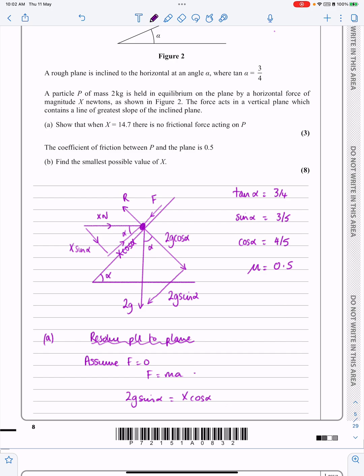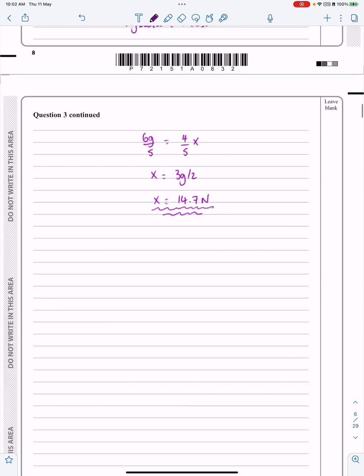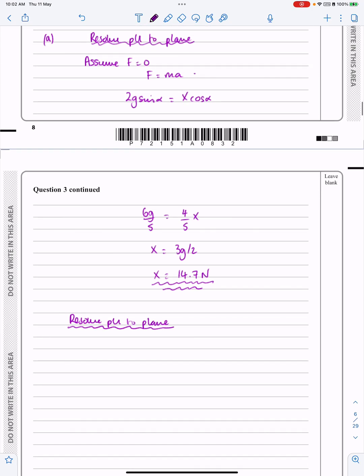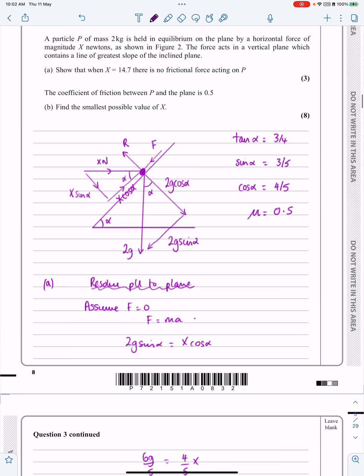What I've got to do then is go through the whole question again. I always tend to start with resolving parallel to the plane. Now this is a clever little bit here—if they want to find the smallest value of X, for the smallest value of X I now need to change my diagram and actually have that friction is going to be acting up the plane.